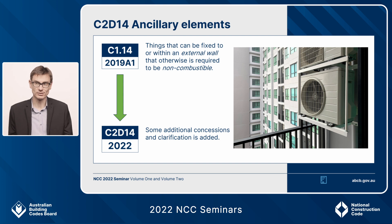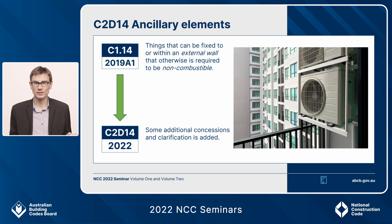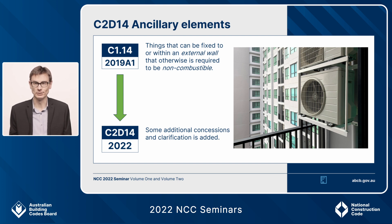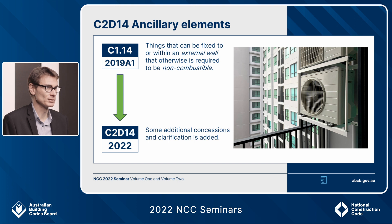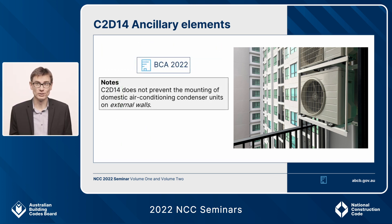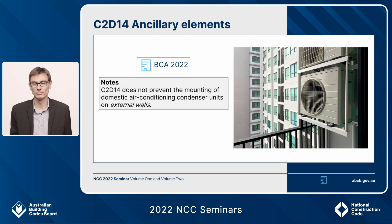One of those new concessions relates to air conditioning condenser units on the outside of class 2 and class 3 buildings. These need to connect through the external wall to the split system inside, and many certifiers have been requiring performance solutions because the penetration sleeve insulation is combustible and found inside the external wall. For 2022, C2D14 has a new concession allowing the insulation for the penetration sleeve to be combustible, along with other combustible items for service penetrations. A new note also clarifies that an air conditioning condenser unit, despite having combustible parts, can be mounted on external walls of type A buildings.